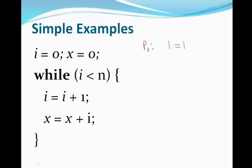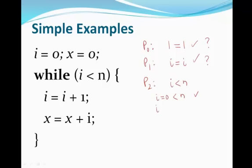We can take a very trivial one, say 1 equals 1, which is a loop invariant because it never changes inside the loop. But it is kind of useless. If you take a statement like i equals i, which is also true inside the loop, again it's a trivial statement and not really useful. If we take a statement like i is strictly less than n — is that a loop invariant? We know that when we start, i equals 0. If we assume n is strictly greater than 0, this condition is true. But after one iteration, i prime is i plus 1. Can we prove that i plus 1 is strictly less than n? The answer is no. Therefore, this is not a loop invariant.